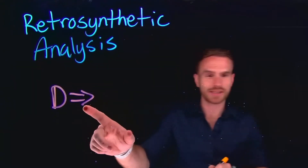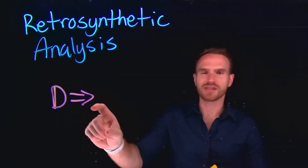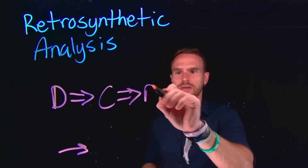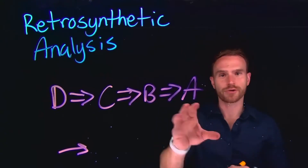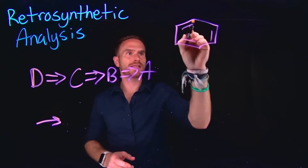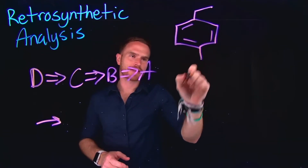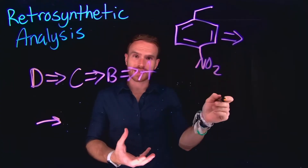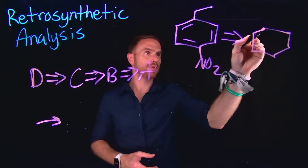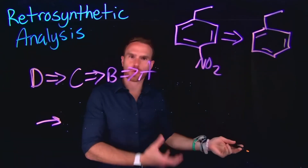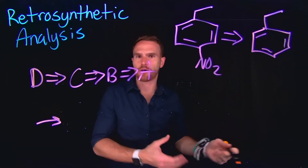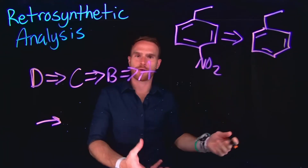From D, we can use the retrosynthetic analysis arrows — which look a little different than your normal reaction arrow — and from here we can work backwards to C, then backwards to B, and then subsequently backwards to our starting material A. For example, if you're given a product you know you need — a benzene ring that has an alkyl chain on it with a nitro group at the para position — the retrosynthetic analysis would be that from a benzene ring with an alkyl chain, I could do a nitration to add it at the para position, because this alkyl chain is an ortho-para directing group.